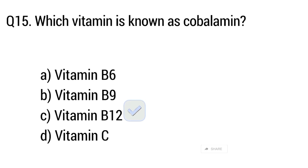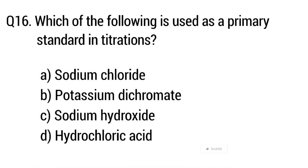Question number 16. Which of the following is used as a primary standard in titrations? The right answer is option B: Potassium dichromate.